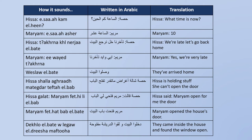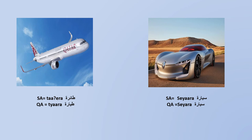Maryam opens the house's door — 'Maryam fatahat bab el beet.' 'Bab' is door, 'el beet' is the house, so 'bab el beet' means the house's door. They came inside the house and found the window open — 'dakhaloo el beet wa laqaw el drisha maftoha.' 'Dakhaloo' means they came inside, 'laqaw' means found, 'el drisha' is the window, 'maftoha' means open.